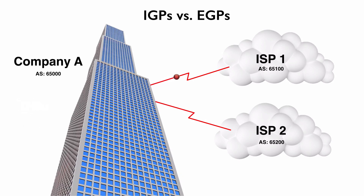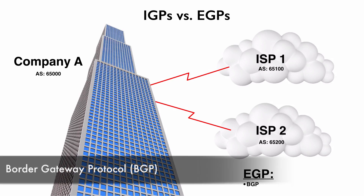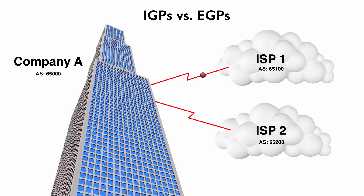If we're going out to another autonomous system — maybe out to one of our ISPs — we're probably going to be running an exterior gateway protocol. Back in the day, there was an exterior gateway protocol literally named EGP, but today there's really only one EGP you're going to run into, and that's BGP — border gateway protocol. To be technical, there is an option for running BGP within an autonomous system, but typically BGP runs between autonomous systems.